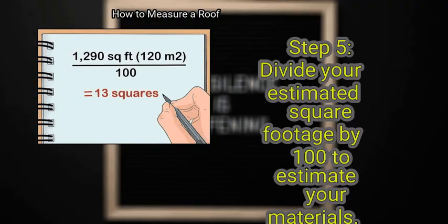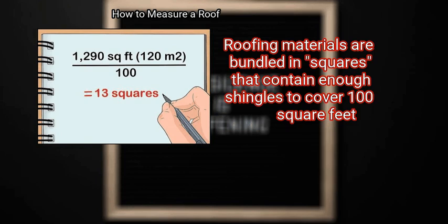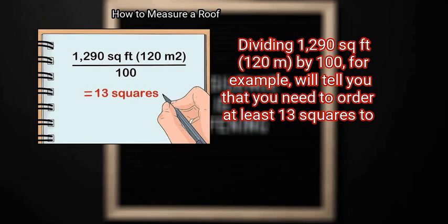Finally, divide your estimated square footage by 100 to estimate your materials. Roofing materials are bundled in squares that contain enough shingles to cover 100 square feet. Dividing 1,290 square feet (120 square meters) by 100, for example, will tell you that you need to order at least 13 squares.